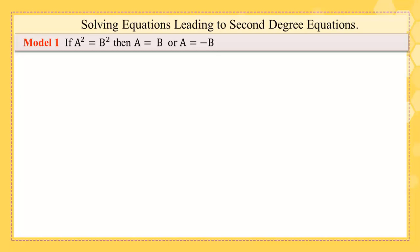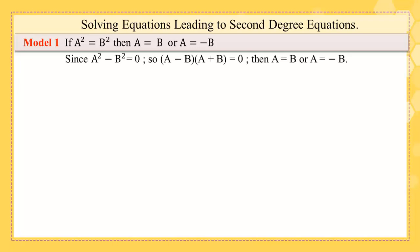Model one: if we have a² = b², then you can say a = b or a = -b. This is because you can write a² - b² = 0, then factorize it as (a - b)(a + b) = 0. So each factor equals zero: a - b = 0 or a + b = 0, giving a = b or a = -b.